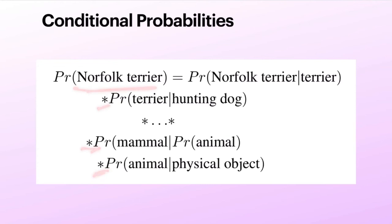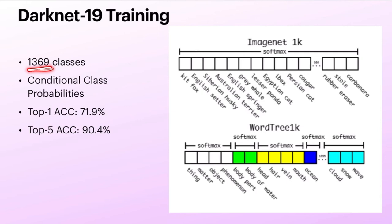With these additional classes — 1369 labels — they are able to achieve 72% top-1 accuracy and 90% top-5 accuracy. These are still very good figures even with the addition of classes and the hierarchy.